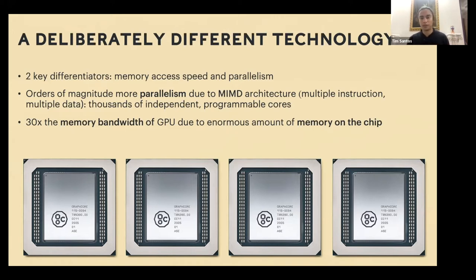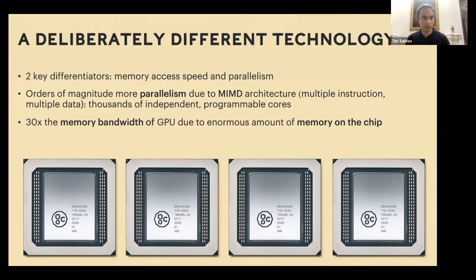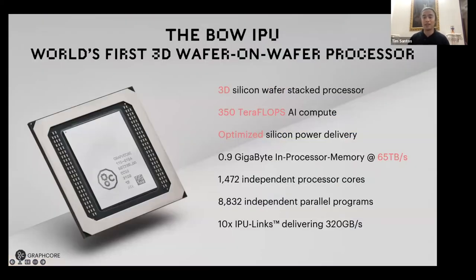Parallelism is achieved through multiple instruction, multiple data that can be programmatically controlled. You could put a single type of codelet inside a very small subset of cores available in the processor. The in-chip memory bandwidth is about 30 times faster than GPUs. We recently released our latest wafer-on-wafer processor — we call it BOW — the world's first wafer-on-wafer processor integration.